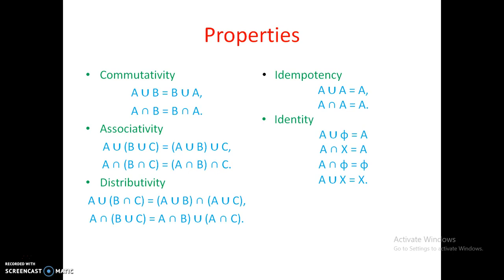Next is the identity property. We consider set A with the null set (phi) and the universe of discourse X. A union phi (null set) gives us A again. A intersection X (the universe of discourse) gives us only A. A intersection phi gives us the null set, since intersecting anything with the null set gives nothing. A union X gives us the universe of discourse, since the union covers the whole thing.